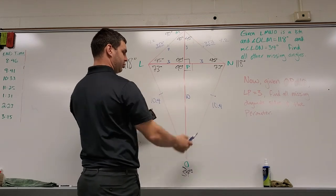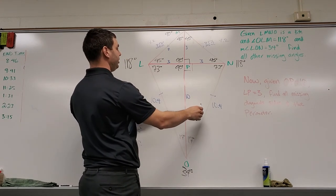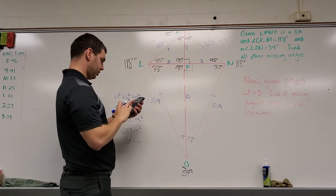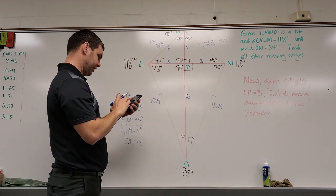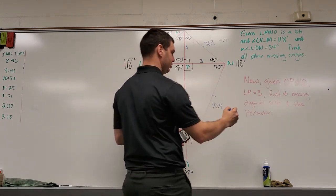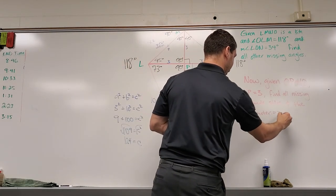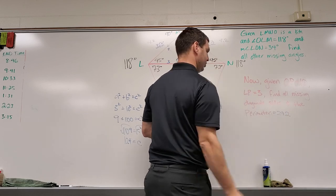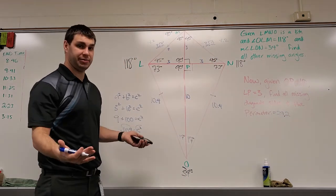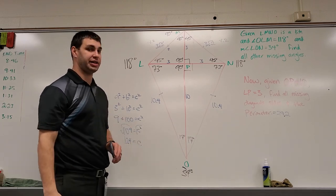10.4, 10.4 is 20.8, 20.8 plus 8.4. If I add all those up, it's 29.2, so our perimeter equals 29.2, whatever label you give us, it could be centimeters, feet, they'd be able to specify in this one.